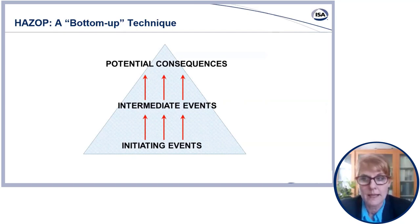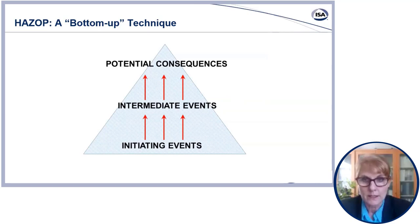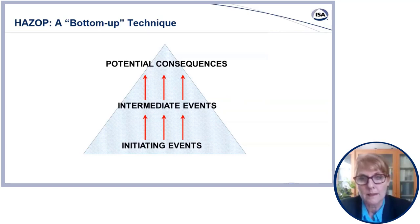This event may, as an intermediate event, develop overpressure and generation of excessive heat. The potential consequences may be a loss of containment of flammable fluids which catches fire, and/or a rupture of the pump casing resulting in missiles — ultimately with potential for injury, environmental pollution, and damage to property.